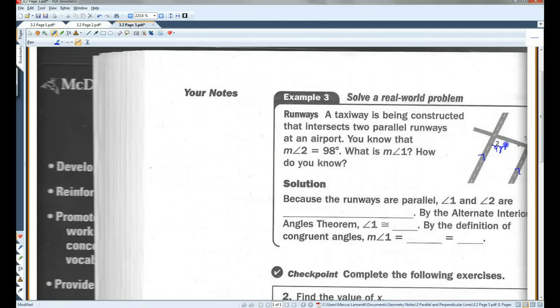Now, hopefully, you guys can see that these two angles are alternate interior angles. They're alternate because they're on opposite sides of the transversal, and they're in between the parallel lines.